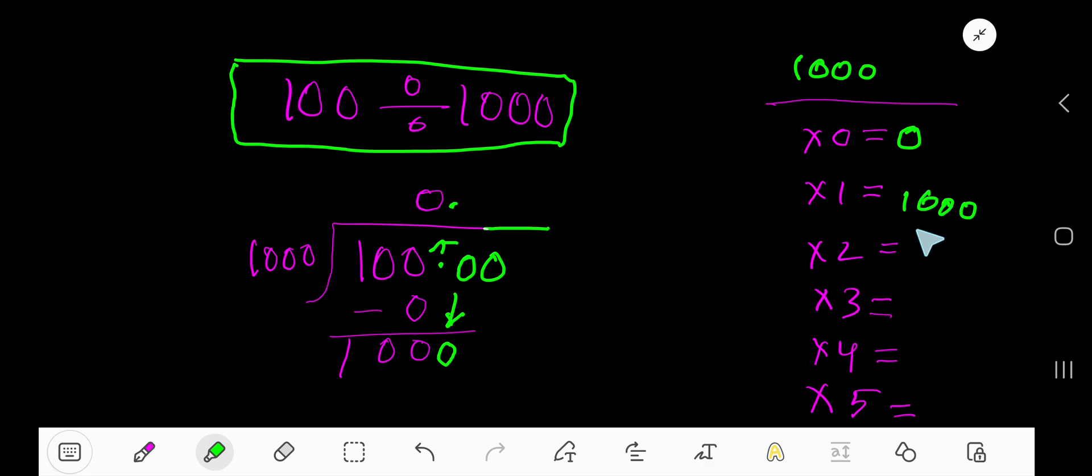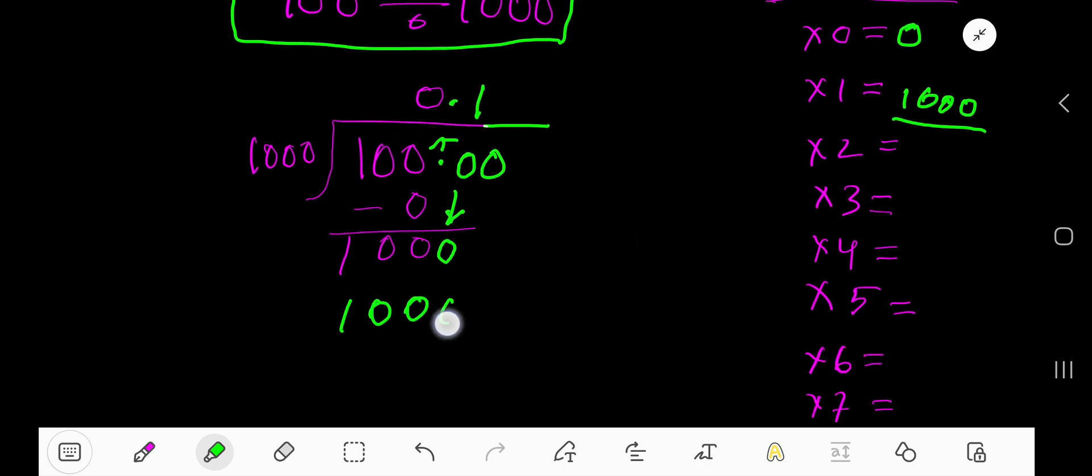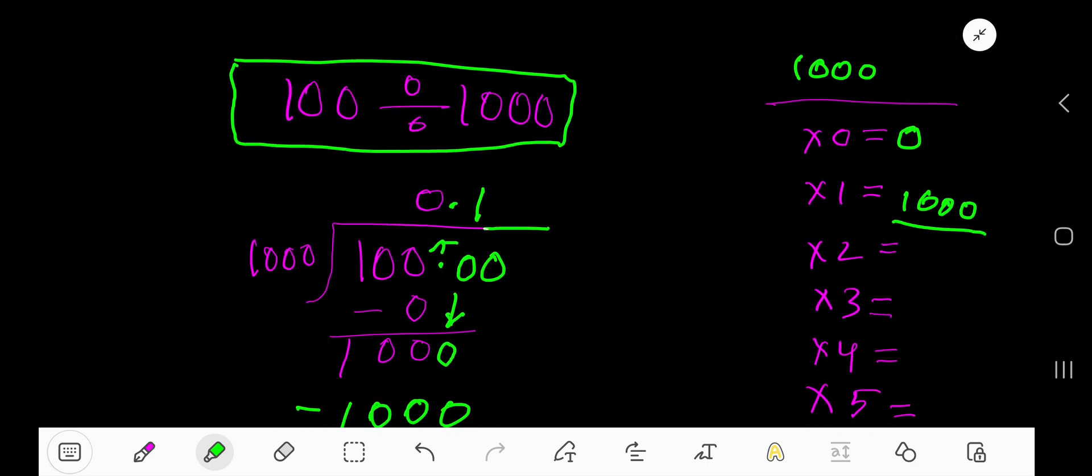Look, 1000 goes into 1000 one time. Write here 1. 1 times 1000 is 1000. Subtract, 0. Look, your result is 0.1.